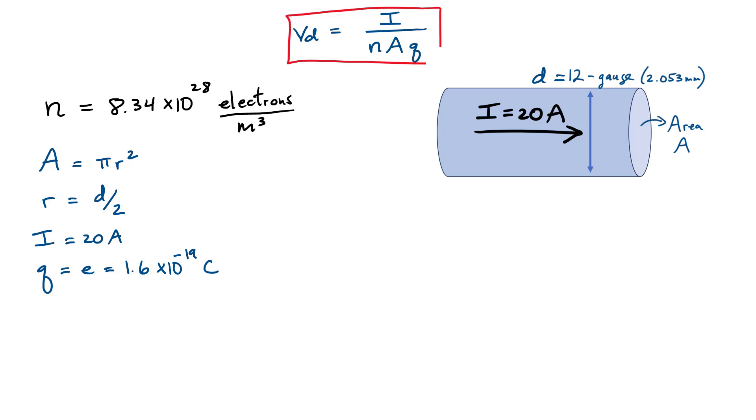We're now in a position to substitute in all our values to calculate my drift velocity. This specific example, I considered a current of 20 amps. The number density I just calculated, 8.34 times 10 to the 28. A is the cross sectional area for this wire. The cross section is simply a circle, you can write it as pi r squared. I've given you also that the diameter of this wire, if it's considered a 12 gauge wire using a US system, this corresponds to a diameter of 2.053 millimeters. So you could calculate what this area is and substitute it inside my equation. The charge is simply the charge of each electron, which is 1.6 times 10 to the negative 19.